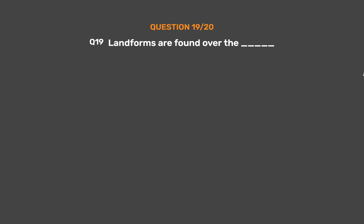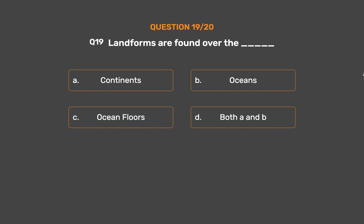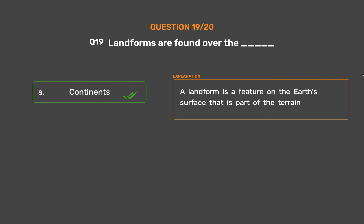Question No. 19. Landforms are found over the? Option A: Continents. Option B: Oceans. Option C: Ocean floors. Option D: Both A and B. The correct answer is Option A: Continents. A landform is a feature on the Earth's surface that is part of the terrain.